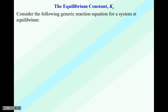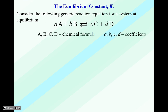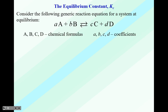We're going to take a look at a reaction. You have species A plus species B yields species C plus species D. These letters are telling you that the lowercase a, b, c, d are the coefficients, and the uppercase A, B, C, D are the chemical entities.